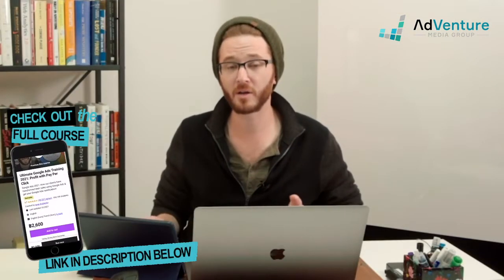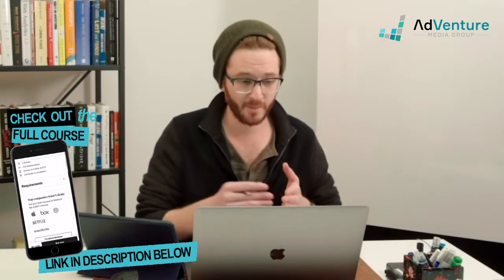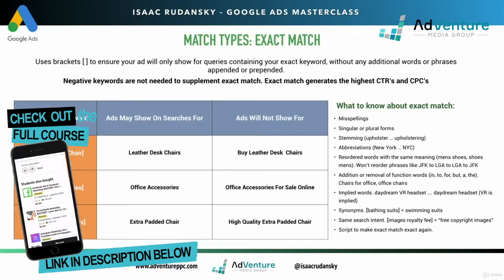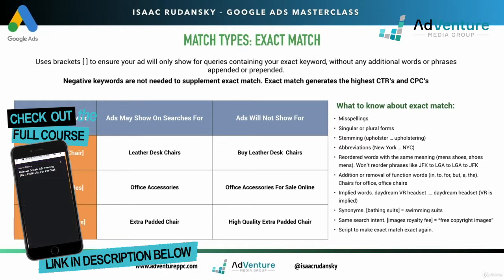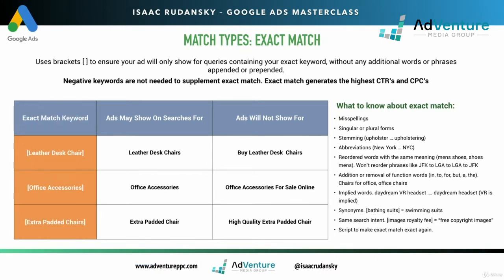In this lecture, we're going to be talking about exact match match type, which is the final form of positive match types that we're going to be discussing in more detail. Exact match uses brackets enclosed around your keyword to ensure your ad will only show for queries containing your exact keyword without any additional words or phrases appended or prepended.